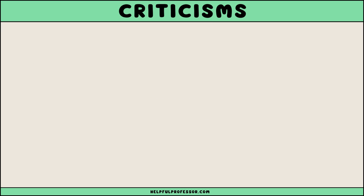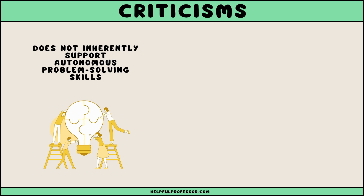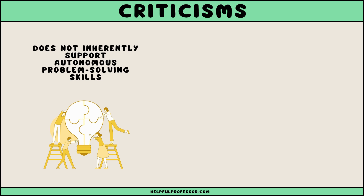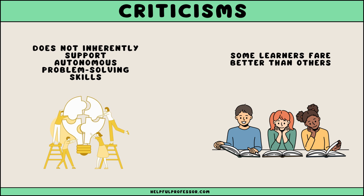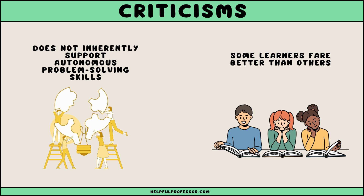However, behavior modeling is not without criticisms. One major critique is that it may not fully address the need for learners to develop autonomous problem solving skills. By focusing on imitation, there is a risk that learners may become dependent on examples and less capable of independent critical thinking when unguided scenarios arise. Additionally, the success of behavior modeling can heavily depend on the individual learners' ability to observe and replicate actions, which can vary widely. This variation can lead to inconsistent outcomes among learners, with some benefiting more than others from this approach.